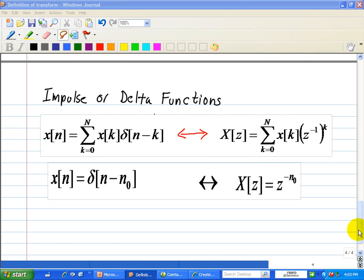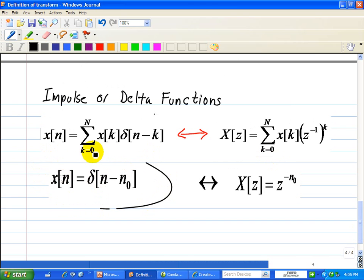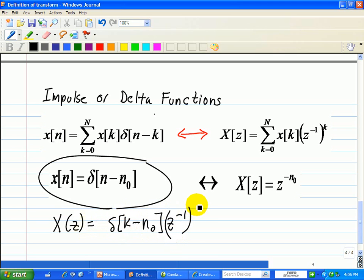A quick note on delta functions. When we have a single delta function with a shift and substitute it in, we get X[z]. Since there's only one term, there's no summation, so we substitute δ[k-n₀](z^-1)^n₀.